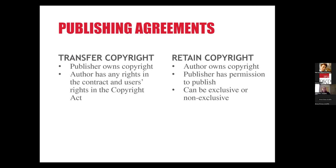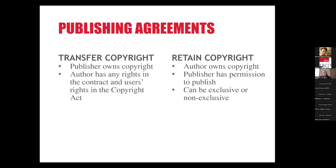The agreement might also specify that the journal has the right of first publication, which means any reuse or republication by the author would have to wait until after this version has been made available and would have to cite this journal as the original publication source. There could also be an embargo period — a certain amount of time that needs to pass before the author is allowed to republish or redistribute the article somewhere else. However, that's pretty uncommon with open access publishing, because the CC licenses would allow a lot of that type of activity.